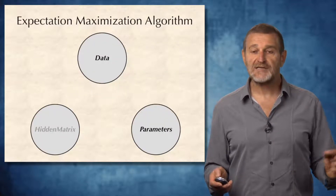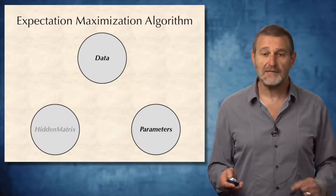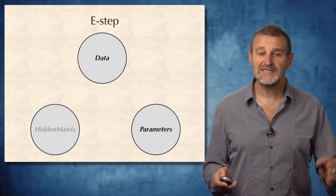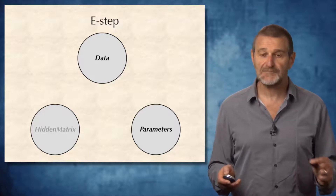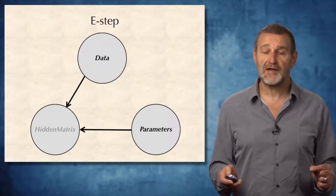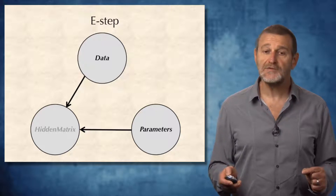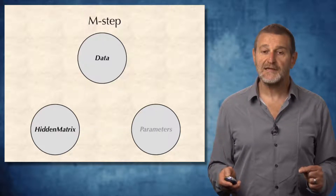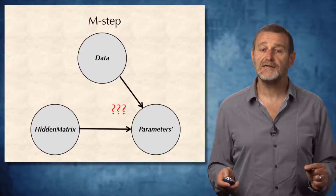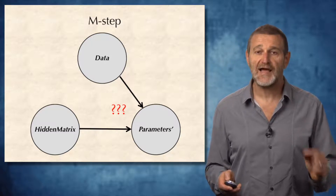The expectation maximization algorithm works in the following way. We start from data and a random choice of parameters, and perform the E-step of the expectation maximization algorithm, which computes the hidden matrix from data and parameters. Now, what we would like to do is, given the hidden matrix and data, compute the parameters. It is still unclear how we can do this — and that's where what we learned about the dot product will help us.